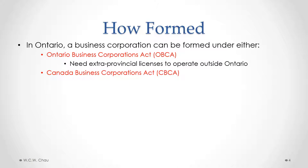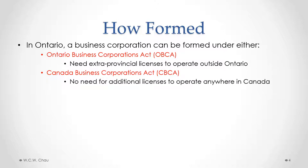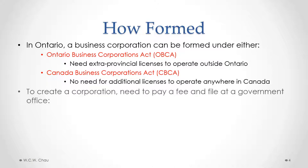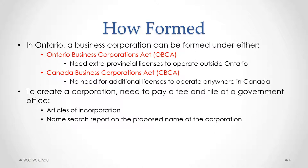If you choose to form a federal CBCA corporation, that allows you to operate anywhere in Canada without need for any additional licenses. Once you've decided to form an OBCA or CBCA corporation, the next step is to pay the appropriate fee and file various documents at the appropriate federal or provincial government office. What you need to file is a document called Articles of Incorporation, and you also need to file a name search report on the proposed name of your corporation, which will indicate whether that proposed name is already being used by someone else.